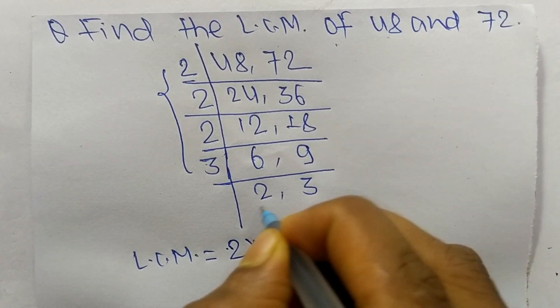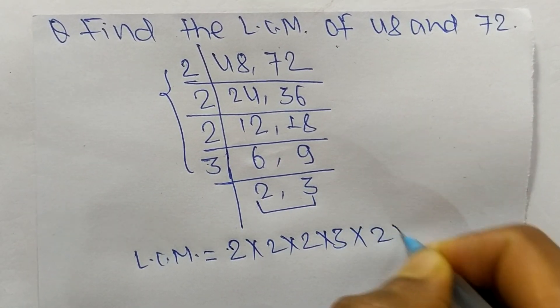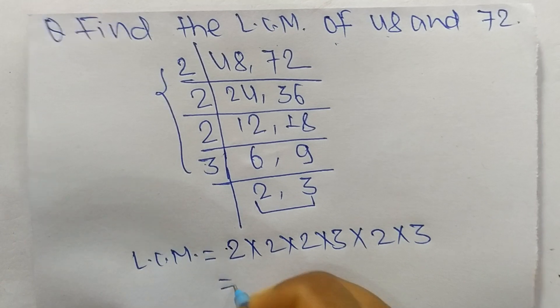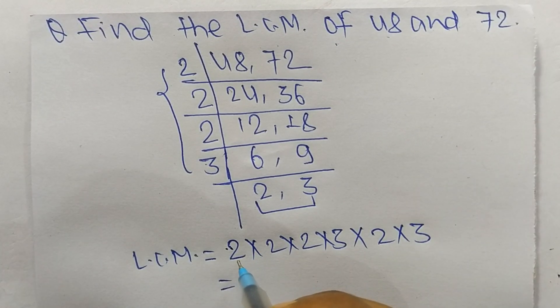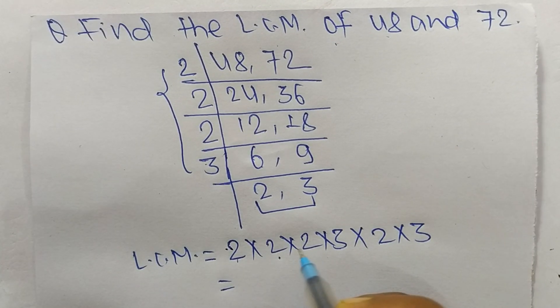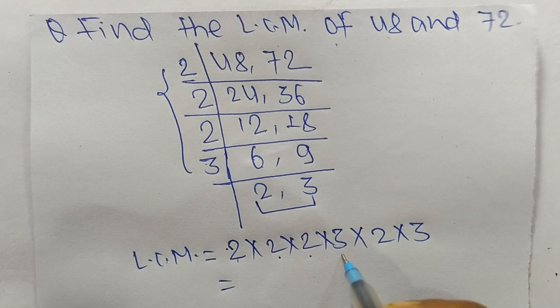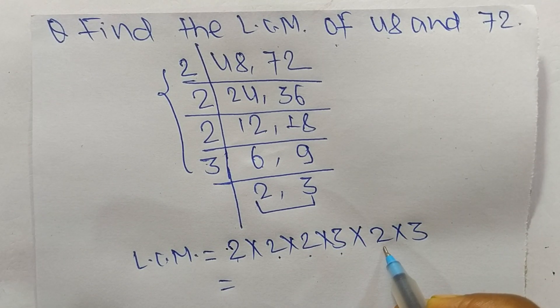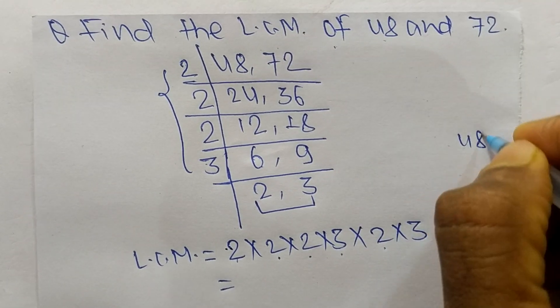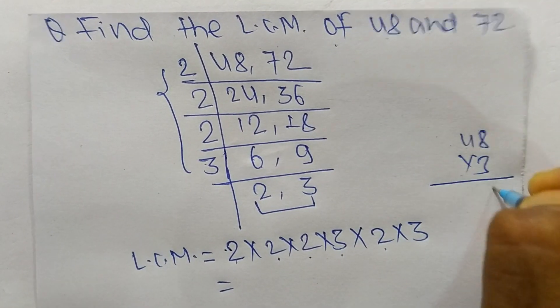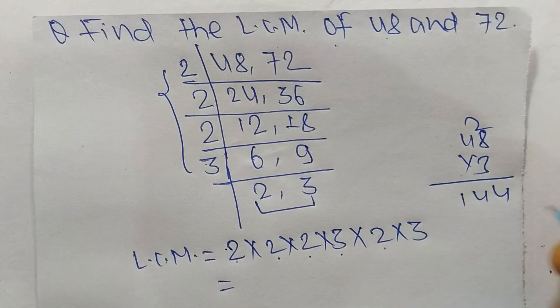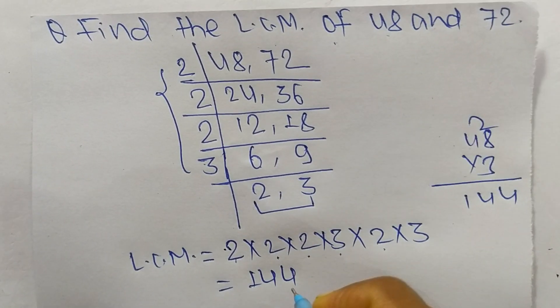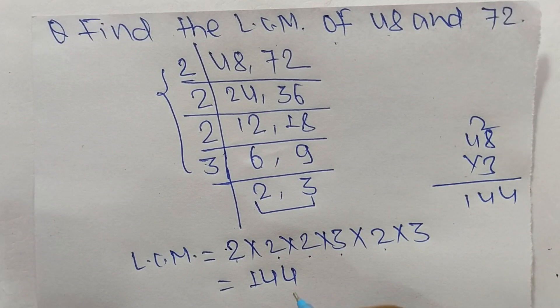And from this part it is 2 times 3. So by multiplying, 2 times 2 means 4, 4 times 2 means 8, 8 times 3 means 24, 24 times 2 means 48, 48 times 3 means 144. So 144 is the LCM of 48 and 72.